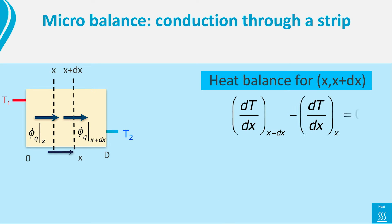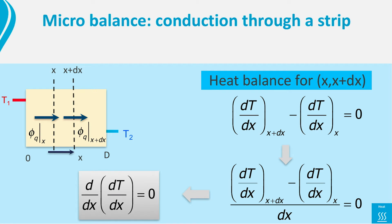Thus, we have that the gradient on the right side minus that on the left side of the strip is equal to 0. Divide by dx to get the derivative and simplify notation, writing it as the derivative of the bracket terms is 0.